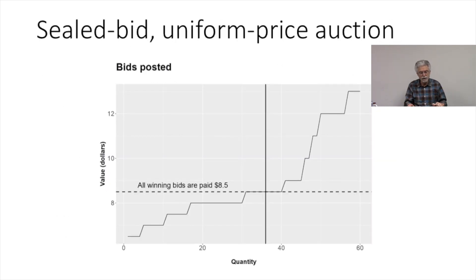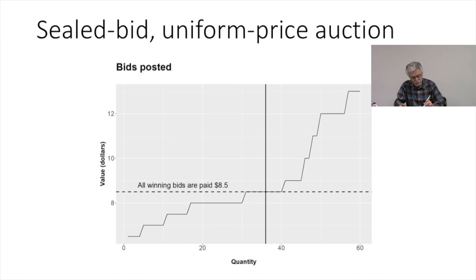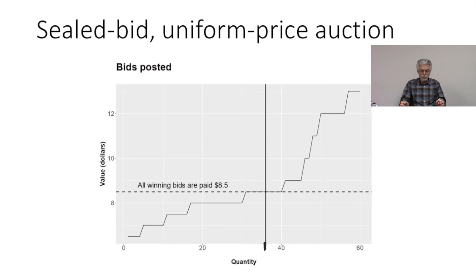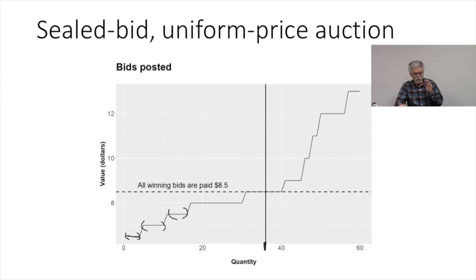Let's look at an example. Here is a picture of an auction for a certain amount of power — it looks like we're purchasing about 35 units. The question is: what are we going to pay for those units of electricity? We hold a sealed bid uniform price auction. The sellers of electricity announce a price and a quantity for each tranche of electricity — for example, 100 megawatts at 6 cents, another 100 at 7 cents, and so forth.